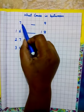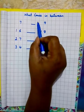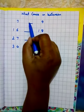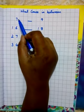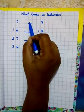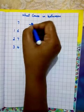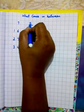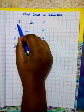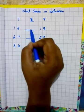Here we have two numbers, 7 and 9. Now we will find what comes in between 7 and 9. First we have 7. What comes after 7? 8. And what comes before 9? That is also 8. So 8 is in between 7 and 9.